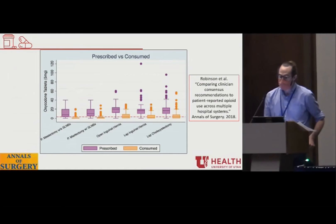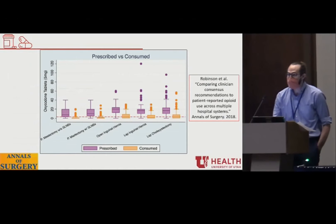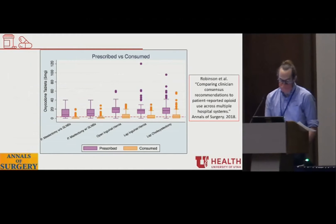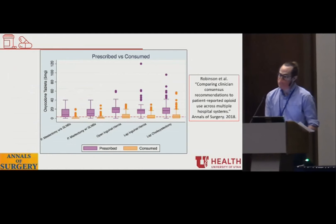Most importantly, we know that despite guideline use, we continue to prescribe too many opioids. This figure from a recently published paper shows that we continue to prescribe three times as many opioids as patients are currently consuming. In this study, the number of pills recommended by most consensus guidelines were needed for only the highest quintile of opioid users.